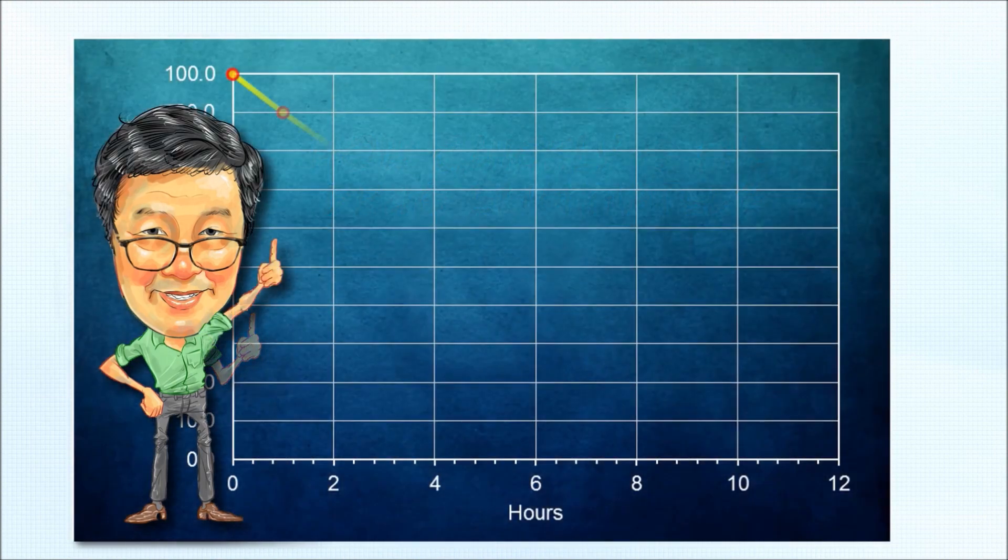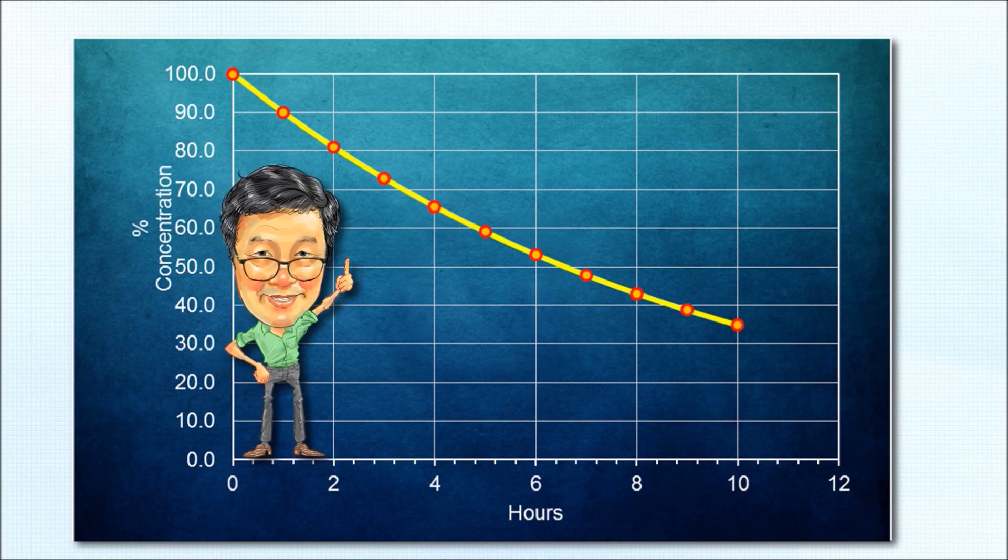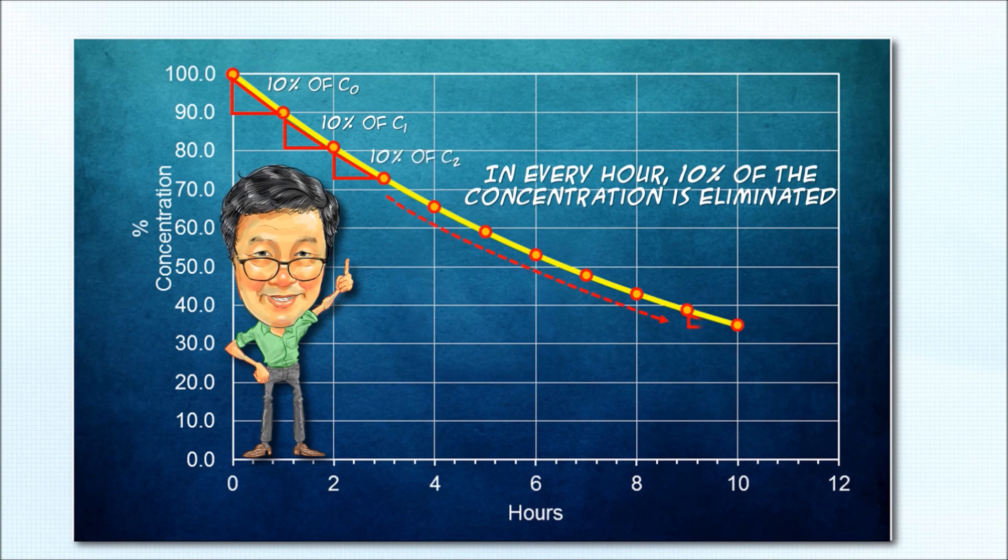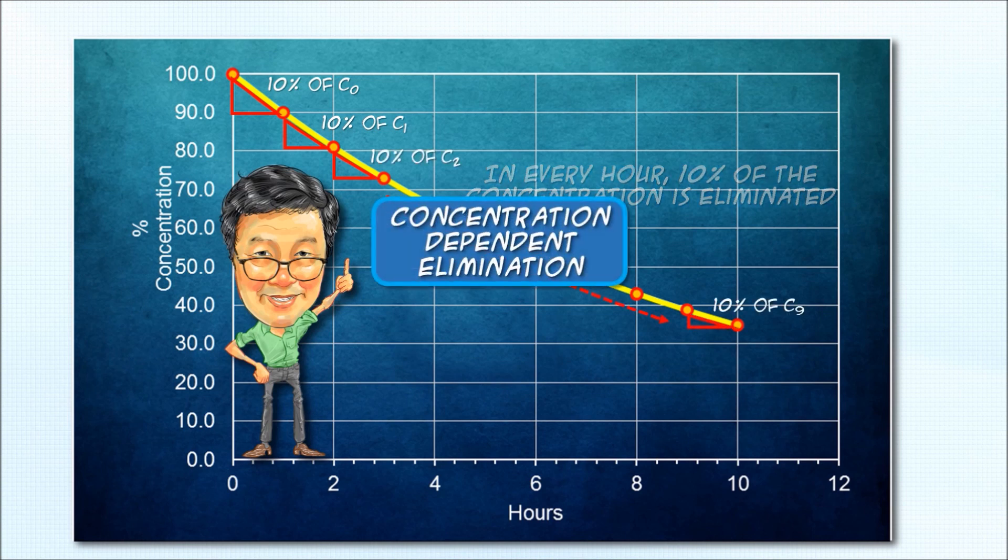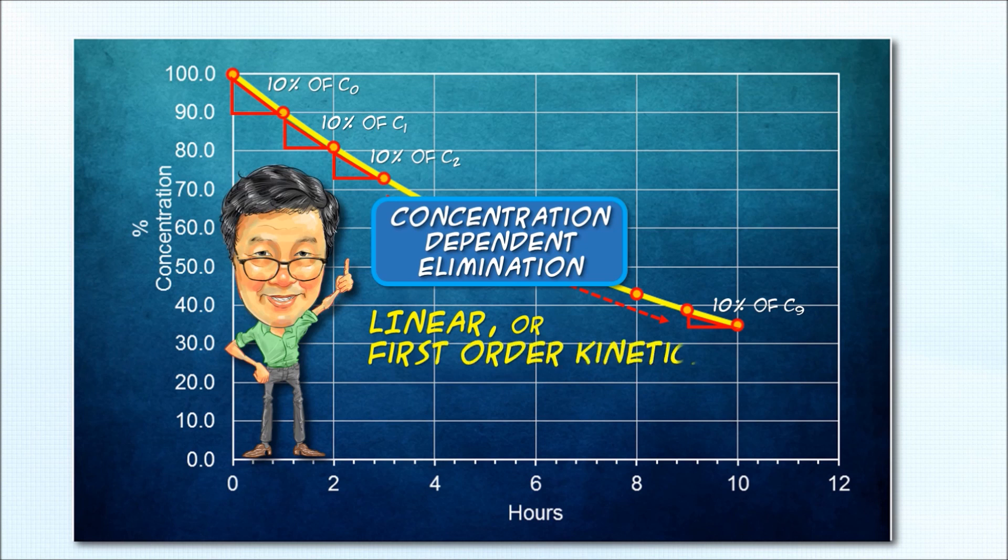Most drugs are eliminated not at a fixed rate but at a rate that is concentration dependent. In this case, let's assume the drug is being eliminated at the rate of 10% of its concentration every hour. This concentration dependent elimination is called linear or first order kinetics.